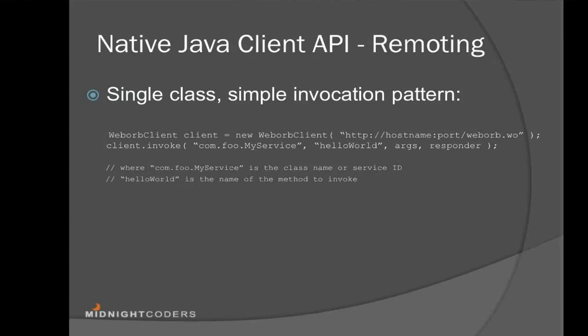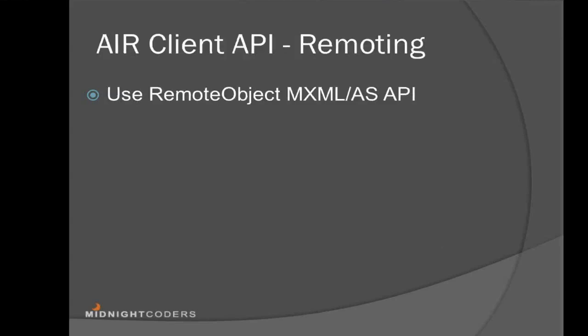Let's continue with the presentation and move on to the actual demo. That was the example of using the native Java API for remoting invocations. As for the Air client, it uses the standard remote object MXML or API — there's nothing new you need to do differently. The only thing to keep in mind is that since it is an Air application, the actual endpoint URL the Air app running on Android needs to use must be an absolute URL, not a relative URL. You will need to configure remoting and messaging destinations to use explicit, absolute URLs.